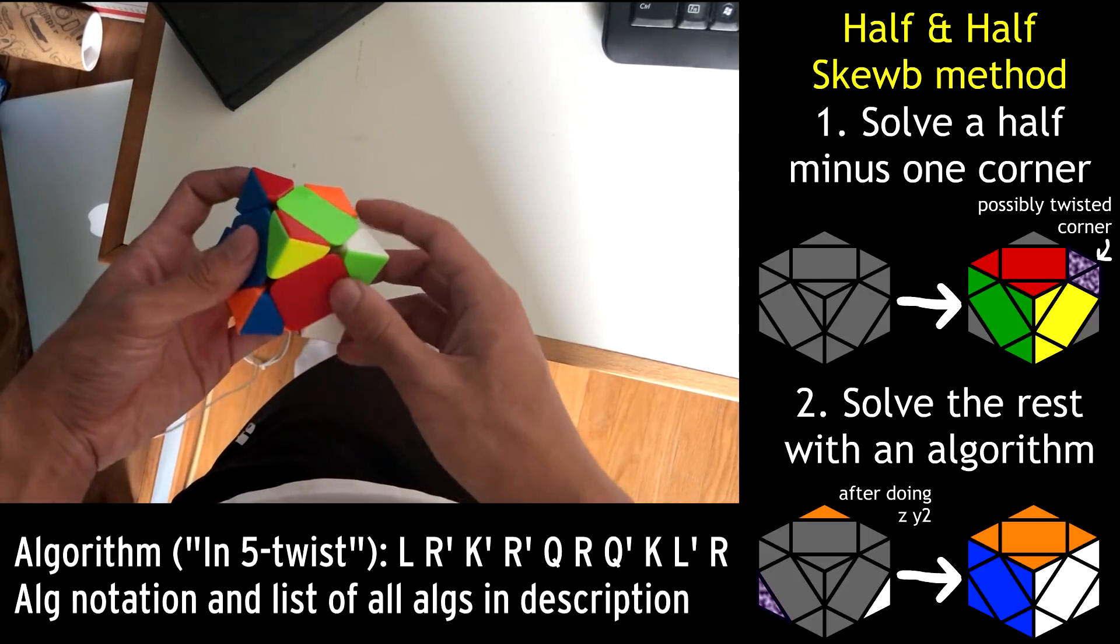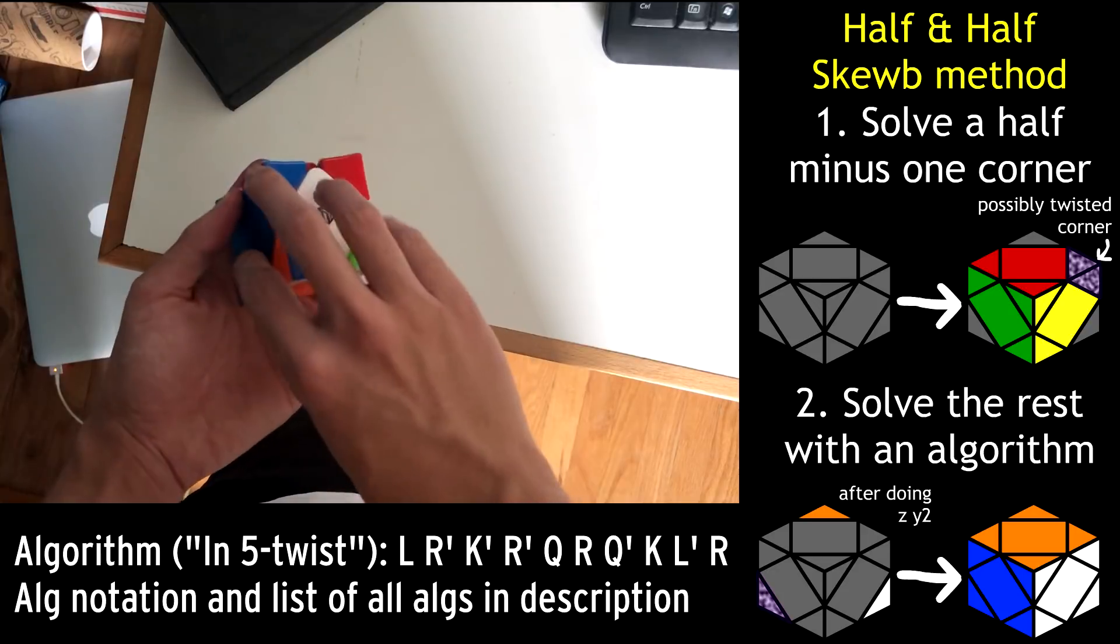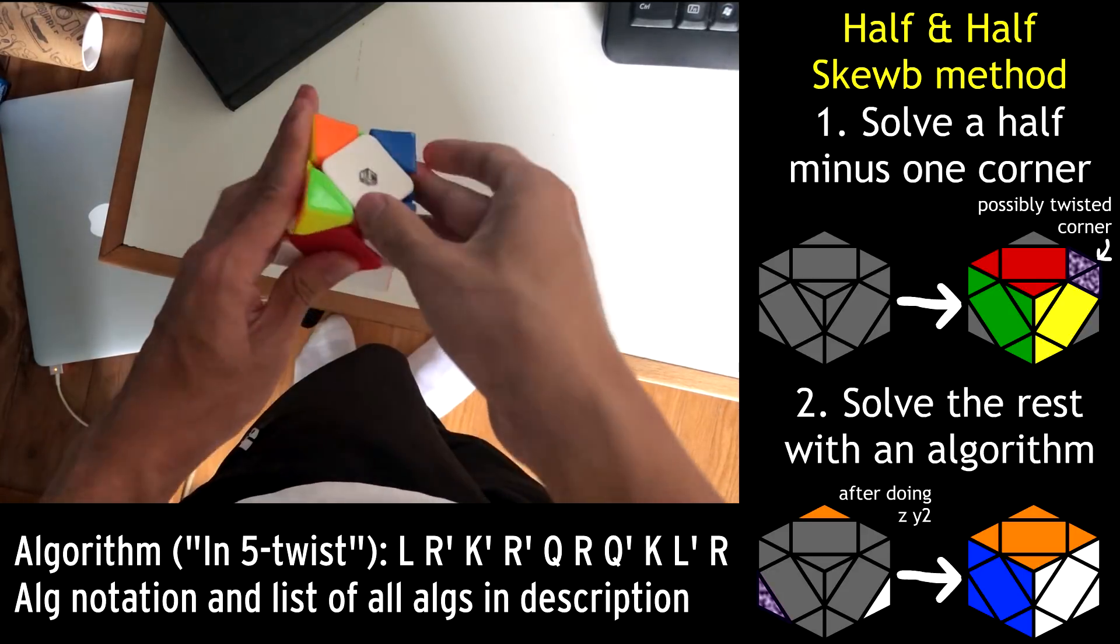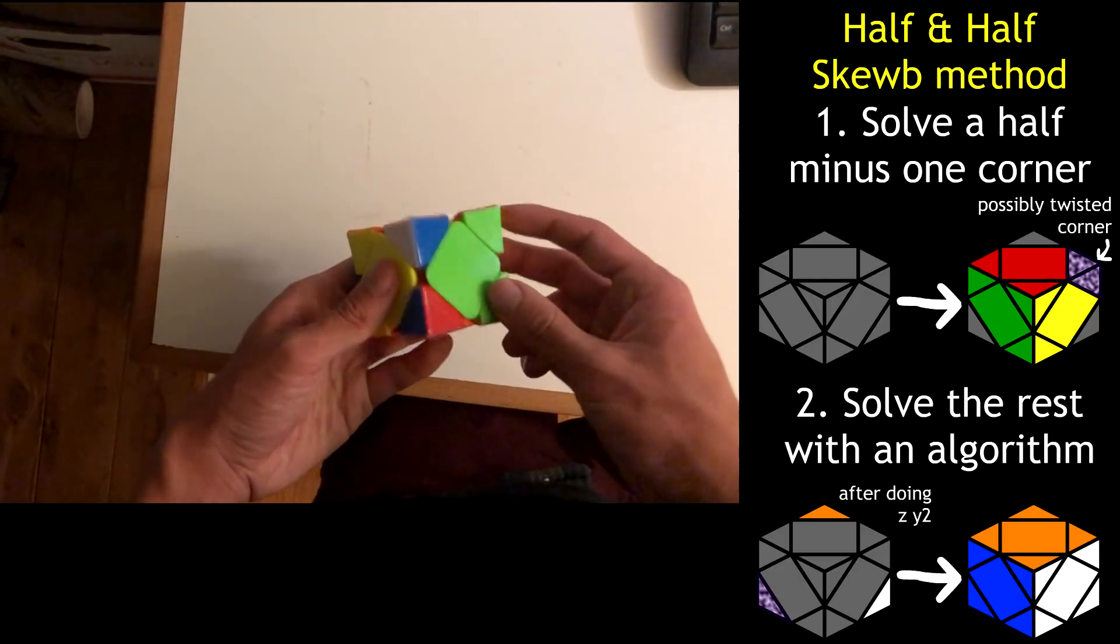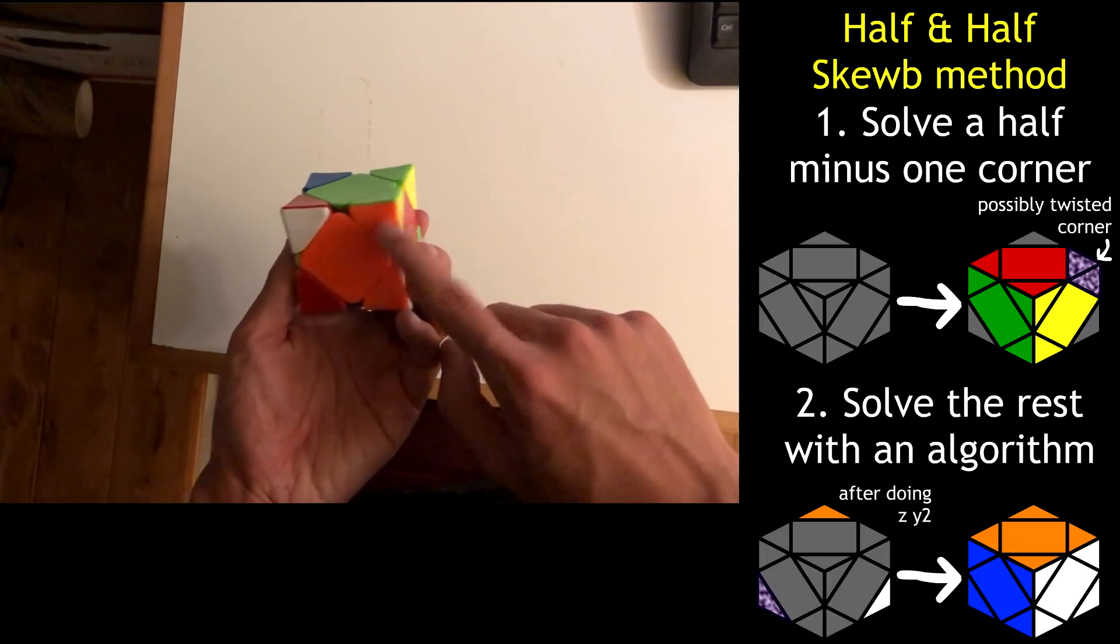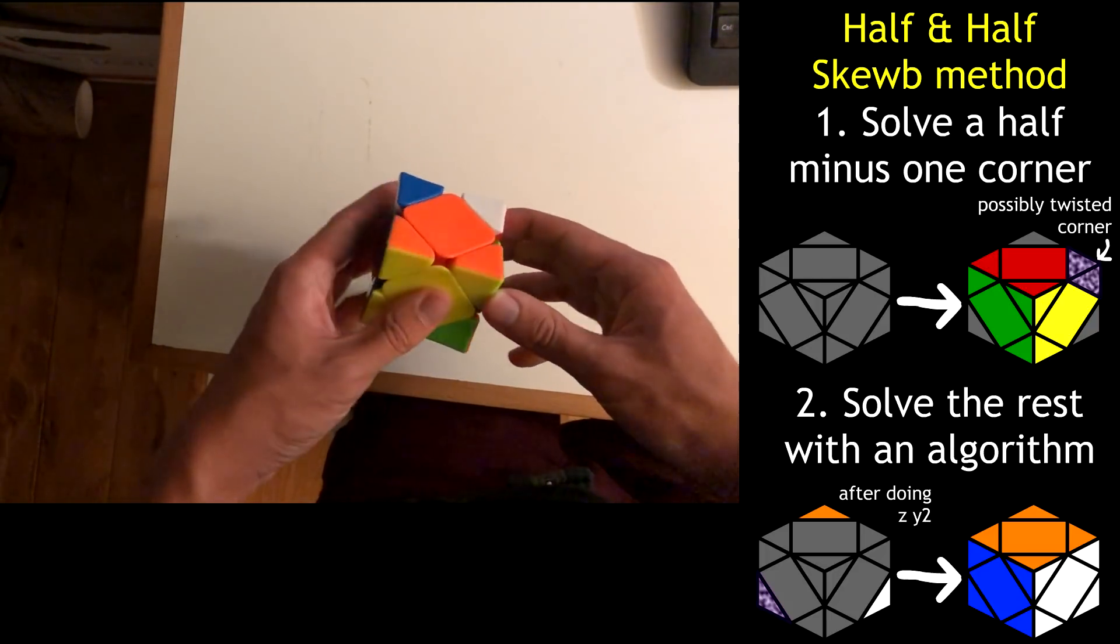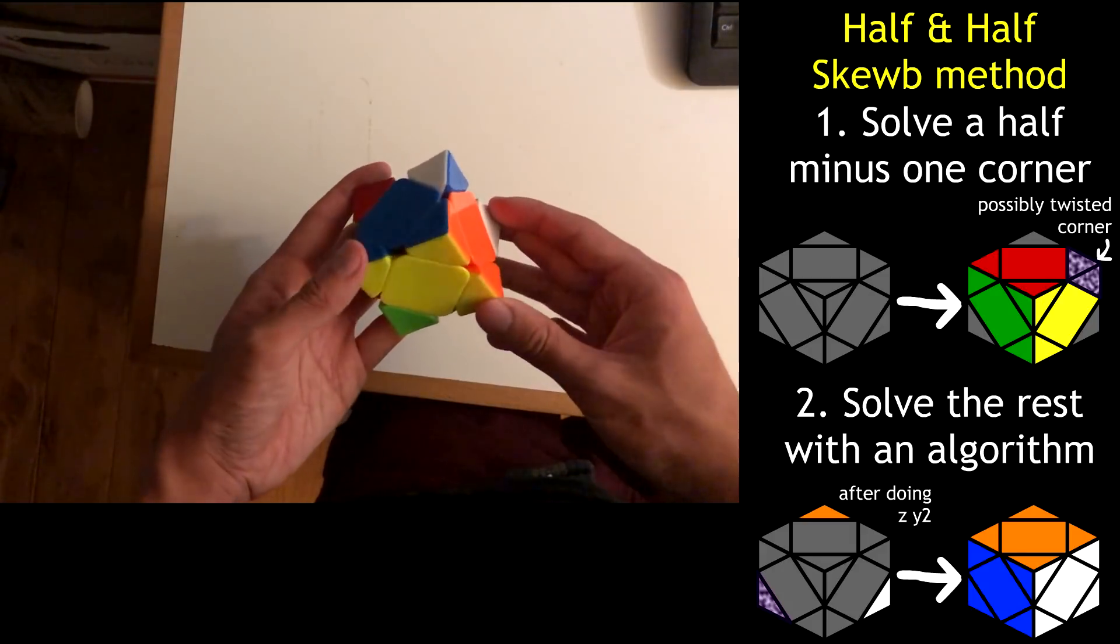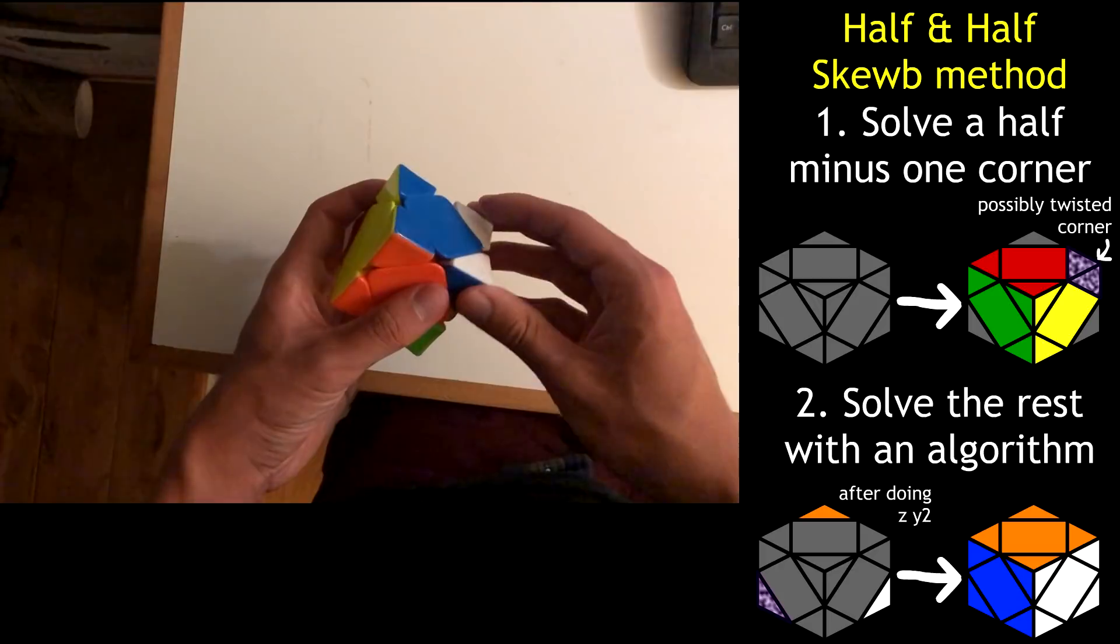Then we have this case, which is a five-corner twist, like that. Here's another example. All I have to do is pair up that orange center with a corner, which it already is in this case, and then bring it up here and put it right next to the other one. And we've got half of a skew minus a corner, like that. And that finishes step one.